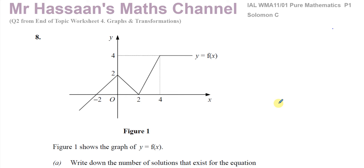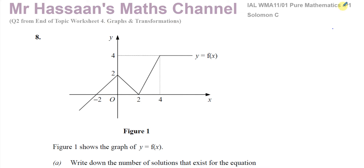Welcome back to Mr. Hassan's Maths Channel. I'm going to go through question number 8 from the C1 Solomon C collection. The Solomon C paper is part of the Solomon papers, which are taken from very old Edexcel papers. The C1 collection gathers all the C1 questions together. This question is included in my P1 end-of-topic worksheet number 4, which is graphs and transformations. I've called this P1 because C1 has changed to P1 now. So this is question number 2 from my worksheet, number 8 from the Solomon C paper.